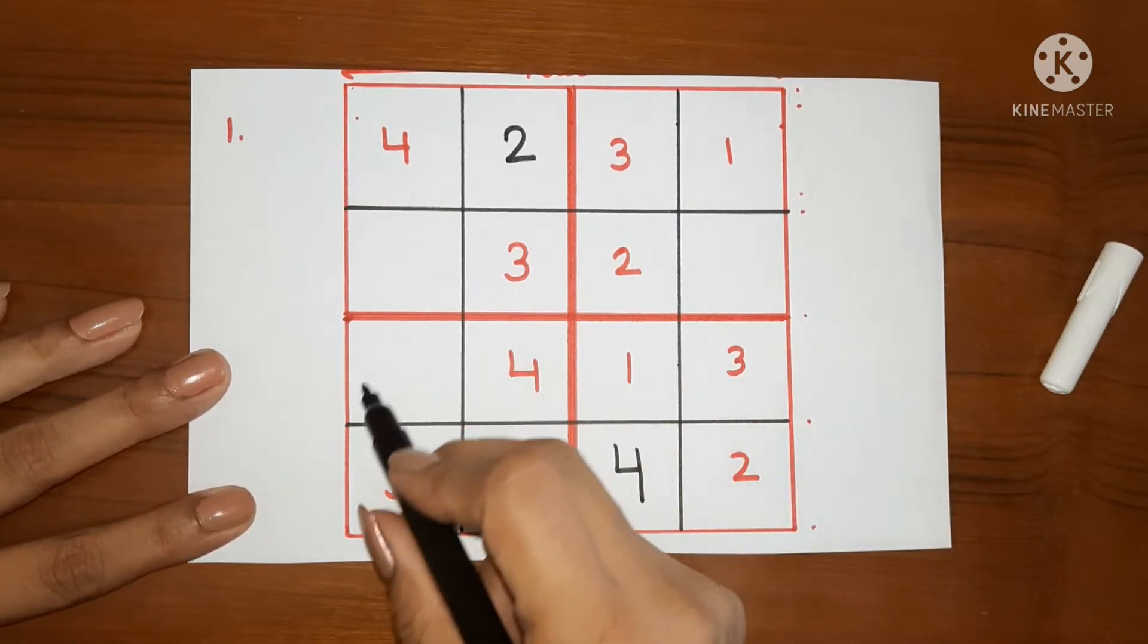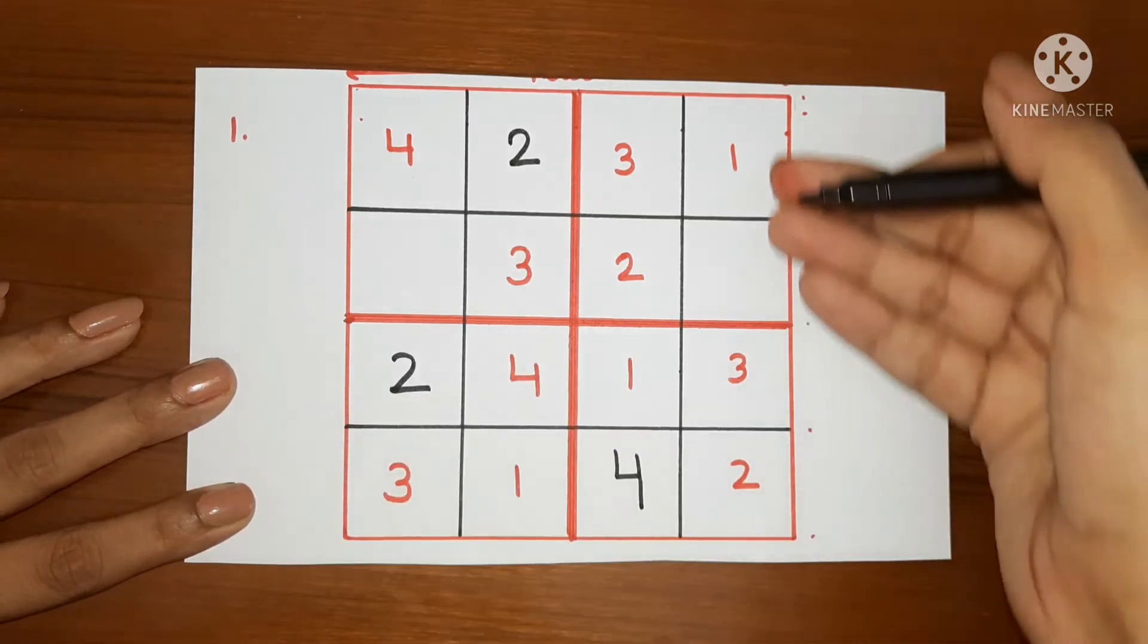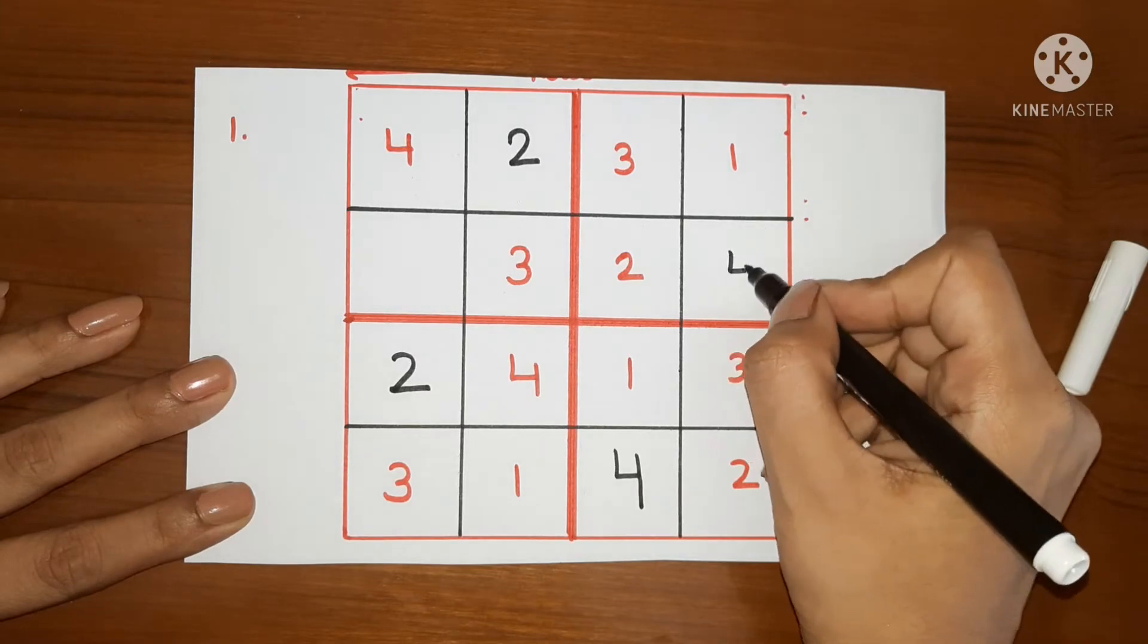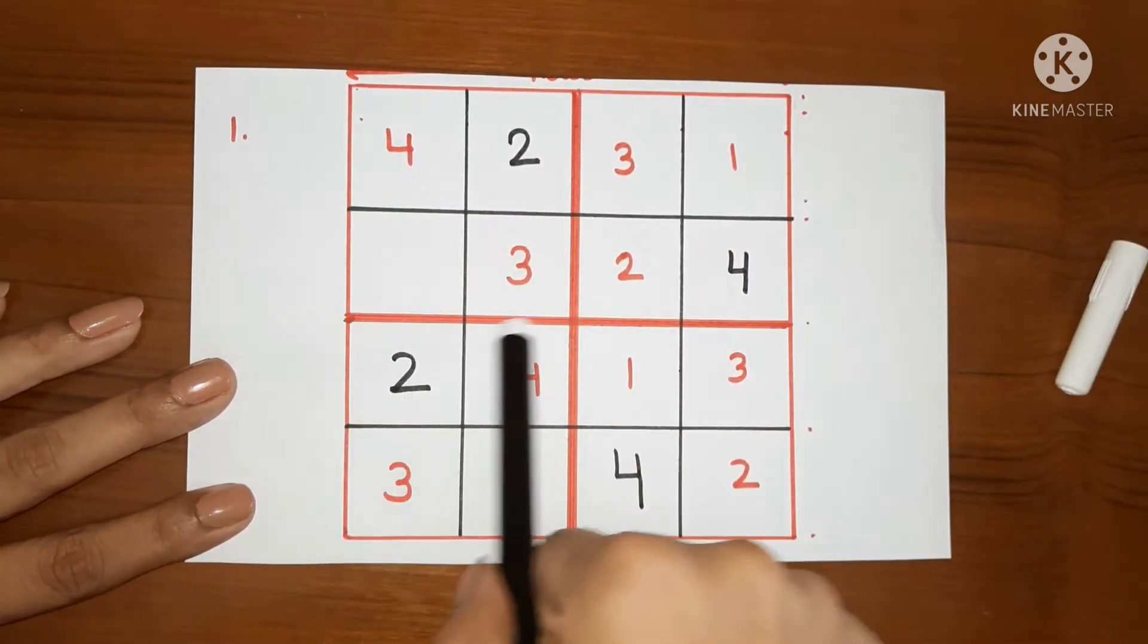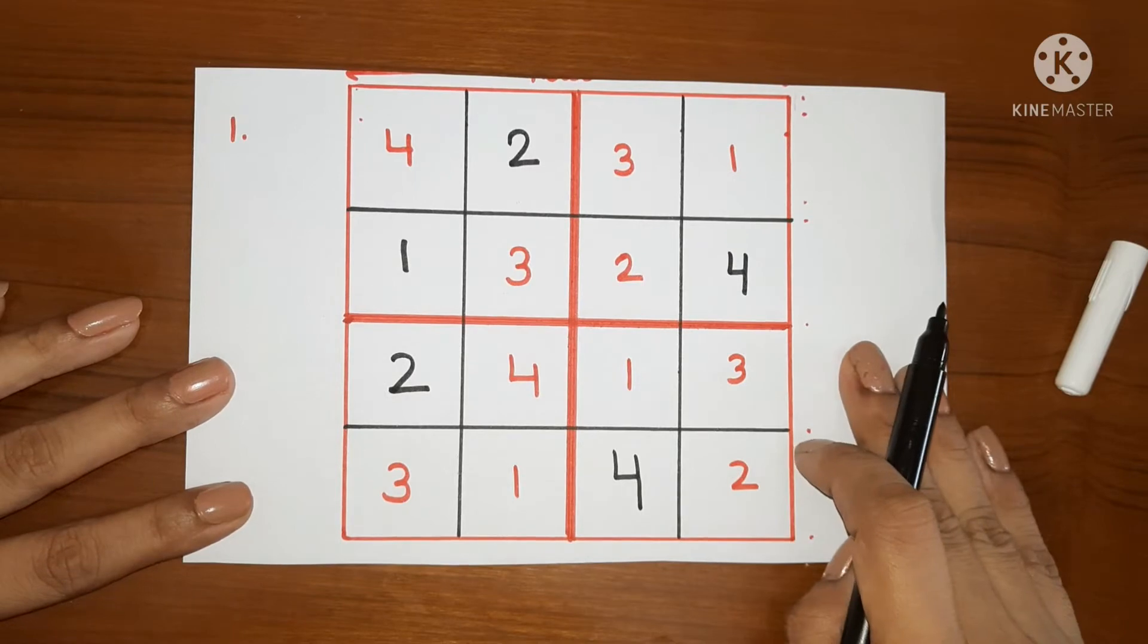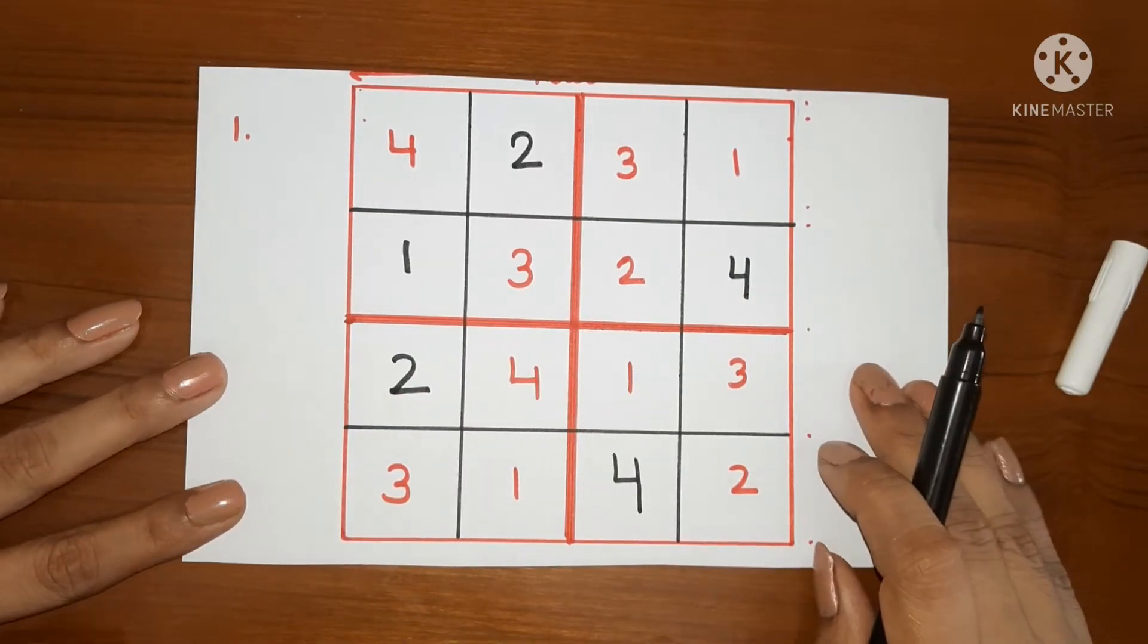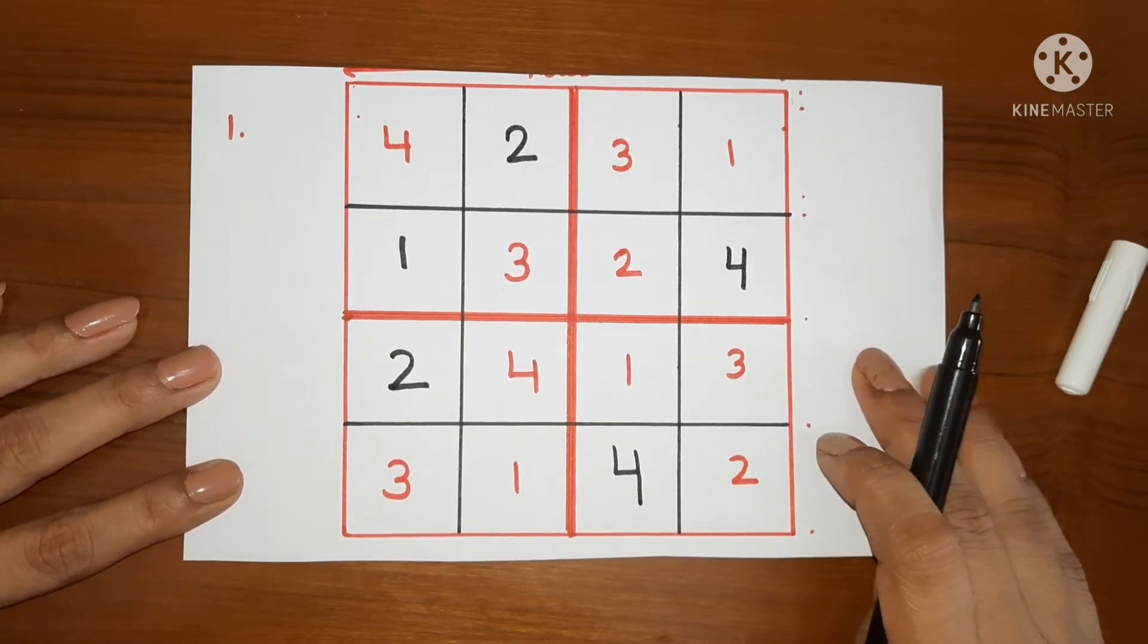Now, let's complete this box. 1, 3 and 4 are here. Only 2 is left. Here in this column, again, only 1 number is missing and that is 4. Now, in this column and in this box also, only 1 number is missing and that is 1. So this is an easy puzzle. You can start with this kind of puzzle first with the child and when they start to understand the puzzle, you can move on to little difficult one.